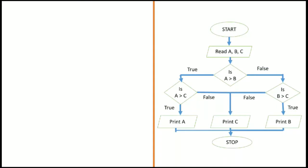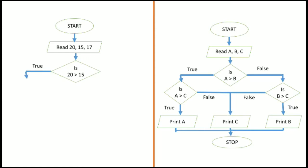Now we will take values and try to solve the problem. Suppose 20, 15, and 17 are the 3 numbers — A = 20, B = 15, C = 17. First, we compare A with B: is 20 greater than 15? Yes, it is true. So now we compare A with C: is 20 greater than 17? Yes, it is true. So the largest number is A, that is 20.